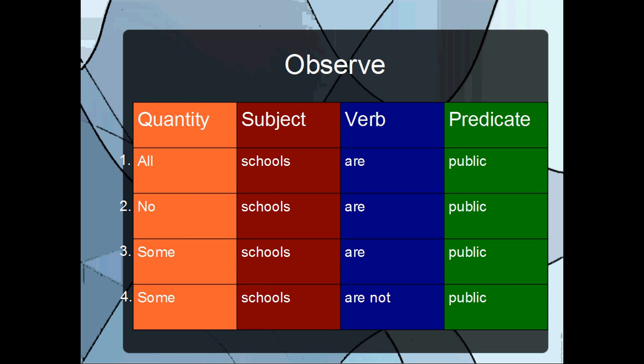Now, for the third proposition, some schools are public. It's saying that the category schools partially falls under the category public. It's saying at least one school falls under the category public. Because the third proposition is making an affirmation, the third proposition has a positive quality.